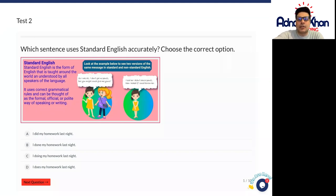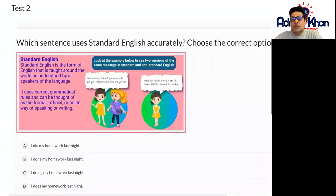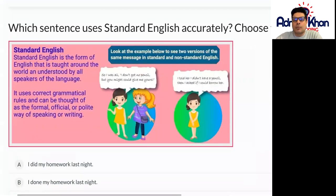Look at the examples below to see the two versions of the same message in standard and non-standard English. The first message says, so I was all I don't go no pencil but you might could give me yours. Doesn't quite make sense and it's not very good standard English.